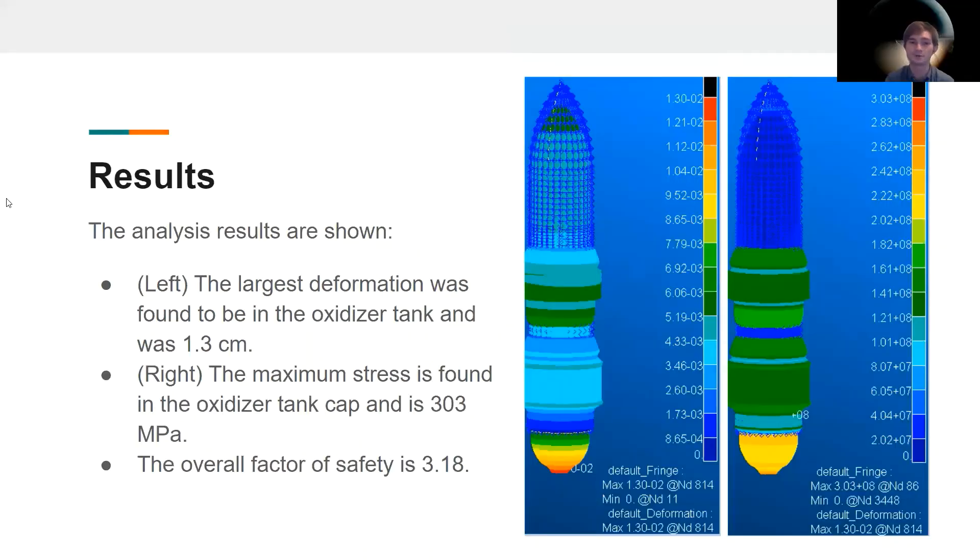Shown here are the results. The left image shows the deformation of the whole inside of the rocket. The largest deformation was found in the bottom cap of the oxidizer tank, and this was 1.3 centimeters.